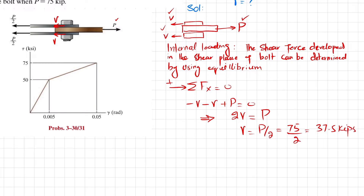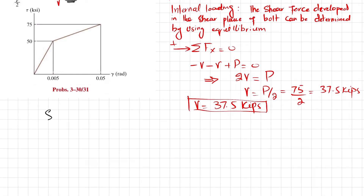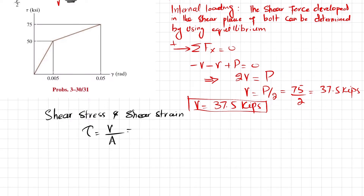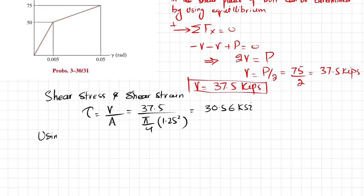We have the shear force V equal to 37.5 kips. We can use this to determine the shear stress. We know that shear stress τ = V/A, where V is 37.5 kips and the area of the bolt is (π/4)d² with d = 1.25 inches. When you calculate it, the shear stress comes out to be 30.56 ksi.